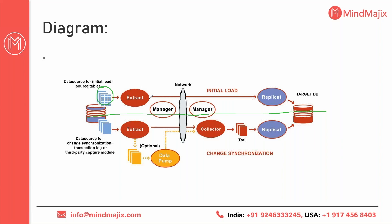First, without data pump: the extract reads the data and sends it directly over the network to the target. If the network is damaged, you cannot guarantee your data is not lost. With data pump, you can overcome this — the extract writes data to a local trail file first, then the data pump reads from the trail file and sends it over the network.